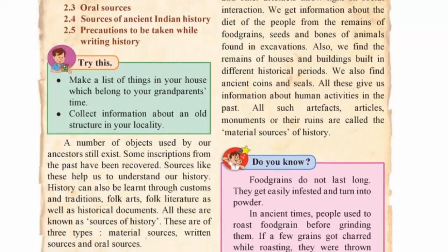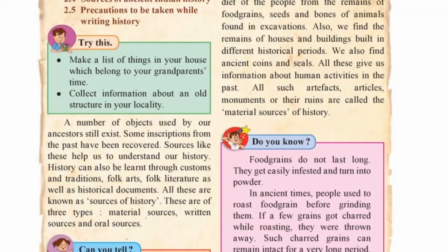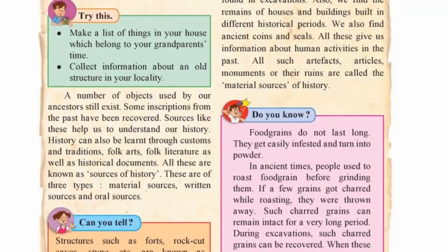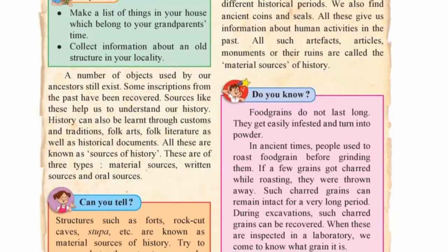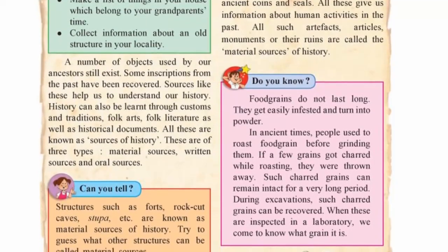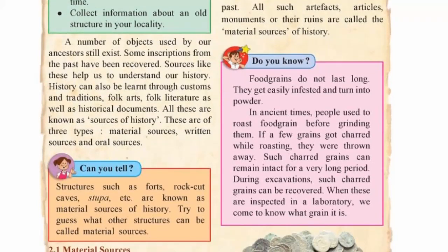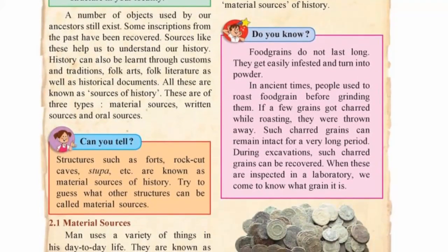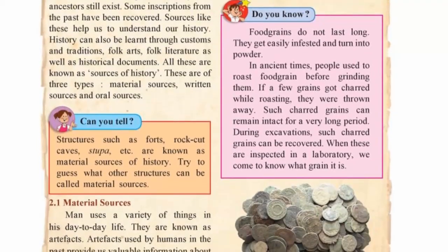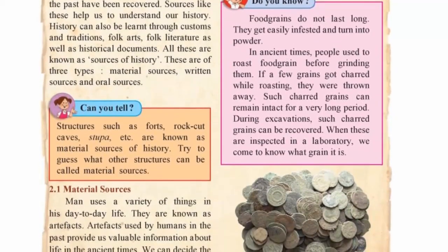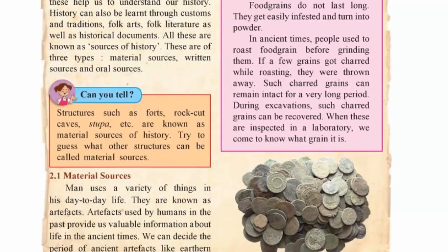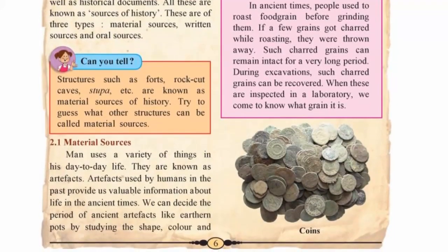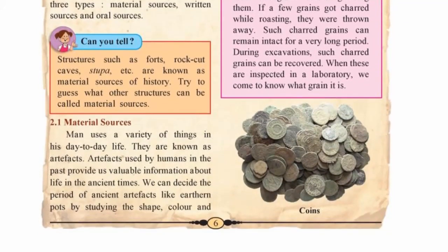First, sources of history. A number of objects used by our ancestors and some inscriptions from the past still exist. These sources help us to understand history. The customs and traditions, folk arts and folk literature, and historical documents help us to understand history. All these are known as sources of history. These sources are material sources, written sources and oral sources.